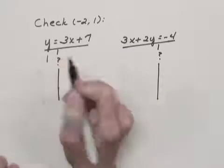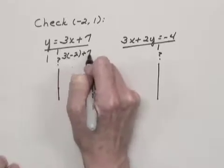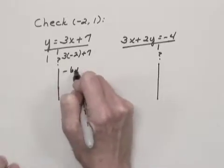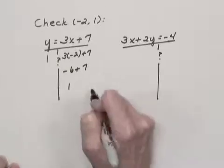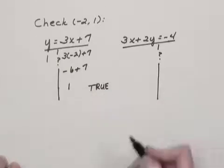So in the first equation, I have 1 on the left. And on the right, I have 3 times negative 2 plus 7. Negative 6 plus 7, or 1. So this is a true statement, and it is a solution of the first equation.